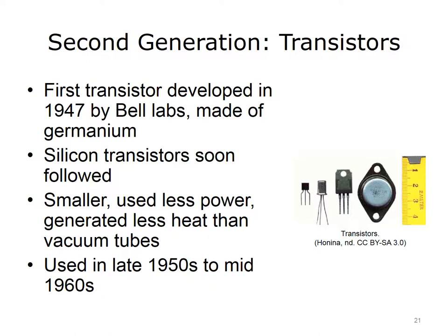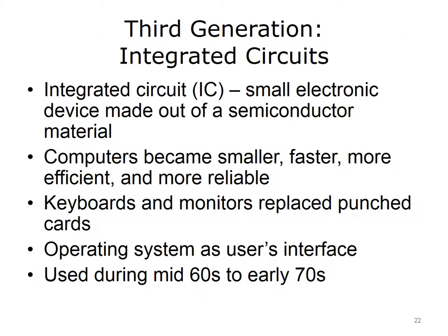These transistors were smaller, used less power, and generated less heat than vacuum tubes. Second-generation computers spanned the period from the late 1950s to the mid-1960s. Third-generation computers used integrated circuits — transistors were miniaturized and placed on an integrated circuit (IC), a small electronic device made out of a semiconductor material. Robert Noyce and Jack St. Clair Kilby invented the integrated circuit. The IC drastically increased the speed, efficiency, and reliability of computers, and because of the compact design, computers also became much smaller.